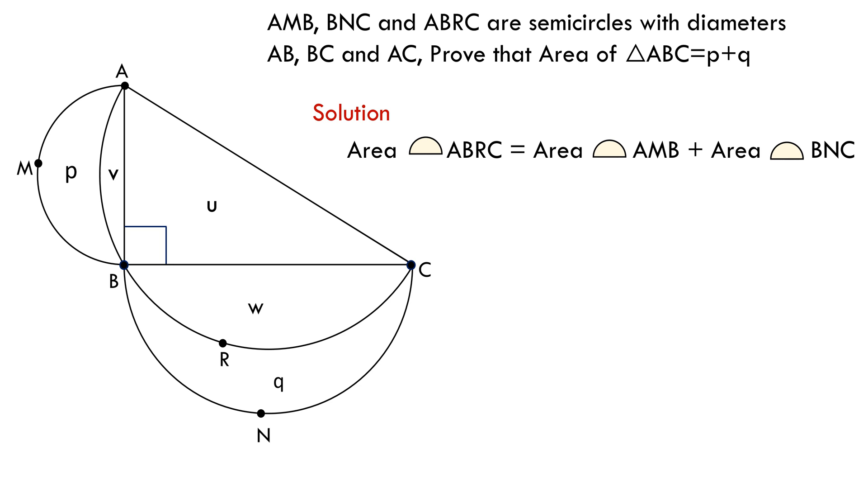We substitute the value of these areas in the above relation and get something like this. We can cross out v and w on both sides and see what we have. We have u equals p plus q, which means the area of the right-angle triangle is equal to the area of the triangle.